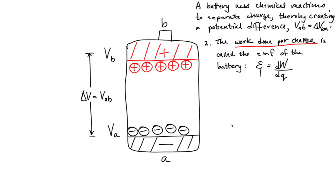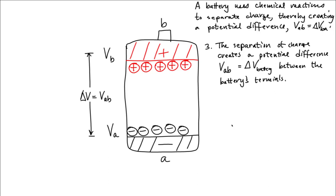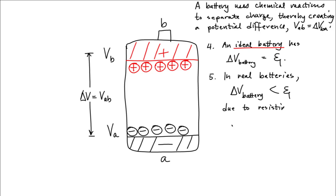Now, the separation of charge creates a potential difference between the battery's terminals. So one thing you should remember is that an ideal battery has a terminal voltage equal to the EMF. Now, in real batteries, there's some level of resistive losses within the battery. So in a real battery, the terminal voltage that you get out of the battery is actually less than the overall EMF of the battery.